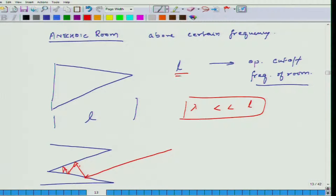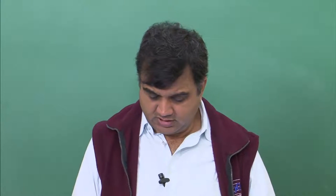The size of these cones is extremely important. If I want my anechoic chamber to work at low frequencies, the cones have to be very large. If the chamber only needs to work at maybe 500 Hz and above, then I do not need very large cones. That is the basic operating principle of these anechoic chambers.